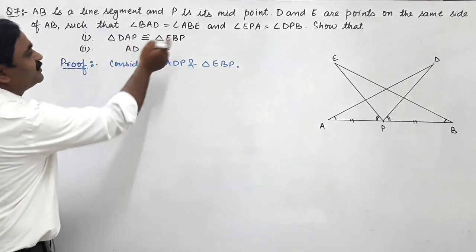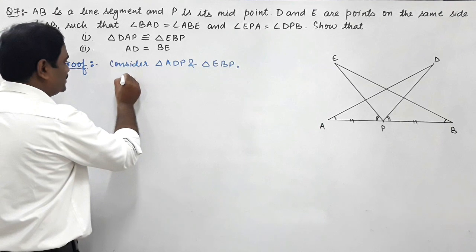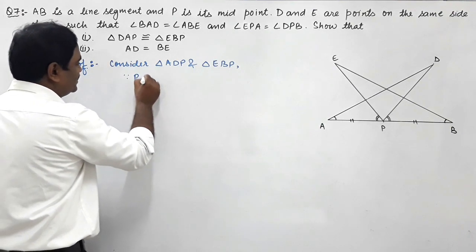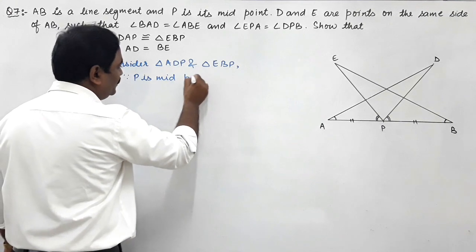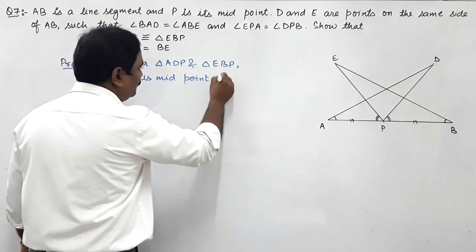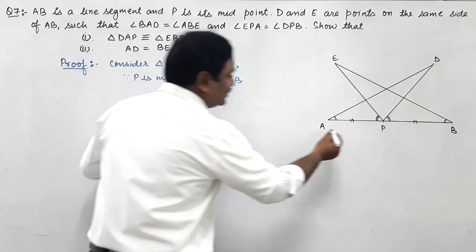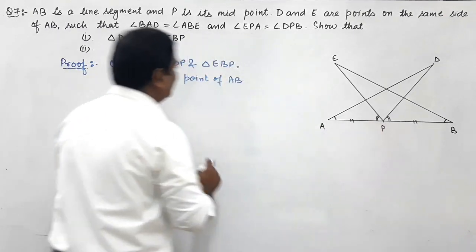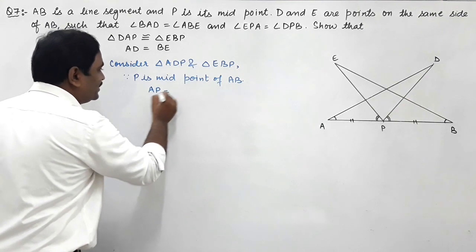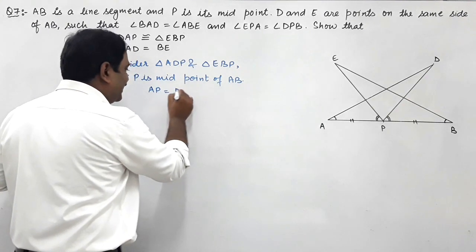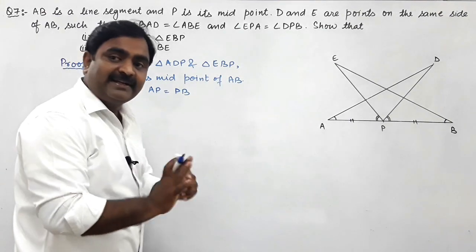Since P is the midpoint of AB — this is given — we can say AP is equal to BP. AP is one side of triangle ADP and PB is one side of triangle EBP. So one side of both triangles is equal.